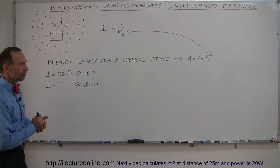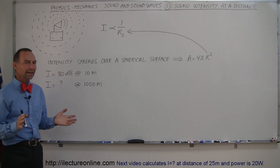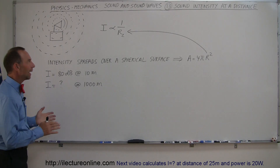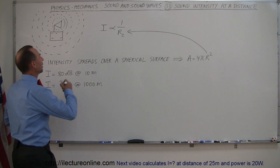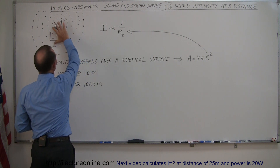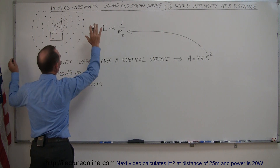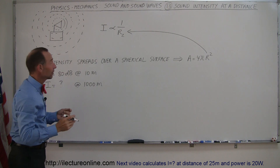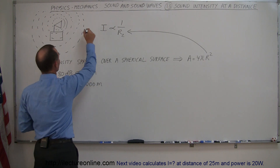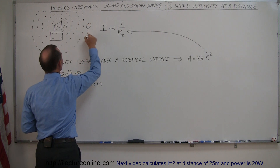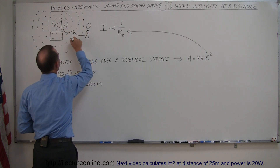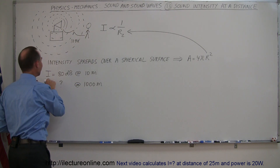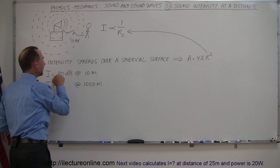Here we're going to take another interesting look at sound intensity and how it changes over distance. Let's say there's a sound source — we don't know the power of the source — but you are listening at a distance of 10 meters, and at 10 meters away the intensity is 80 decibels.